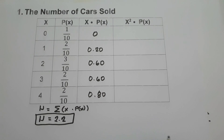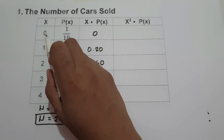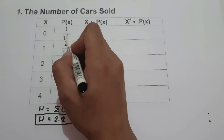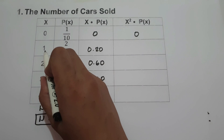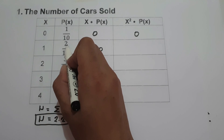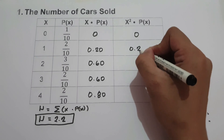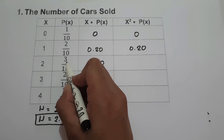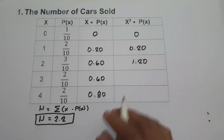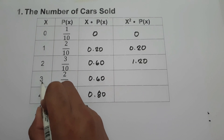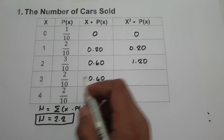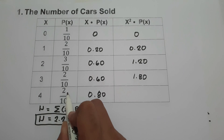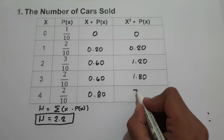To find the last column, we multiply x by itself and then multiply by p(x). So: 0 times 0 times 1 divided by 10 is 0. Then 1 squared times 2 divided by 10 is 0.20. Then 2 squared is 4, times 3 is 12, divided by 10 is 1.20. Then 3 squared is 9, times 2 is 18, divided by 10 is 1.80. Then 4 squared is 16, times 2 is 32, divided by 10 is 3.20.